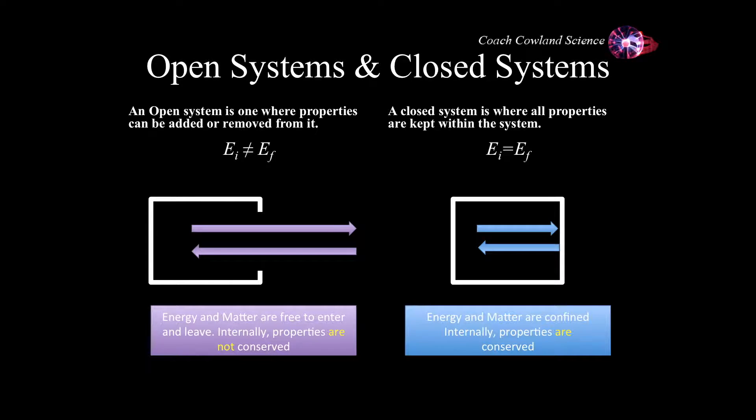So I have mentioned systems before, and in order to understand conservation you need to understand when something is conserved and when something isn't. And in order to do that we need to look at what are called systems: open systems and closed systems.